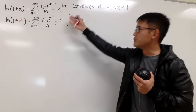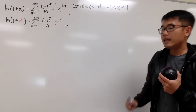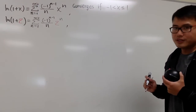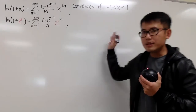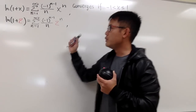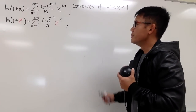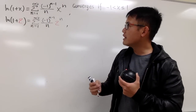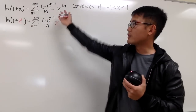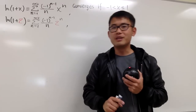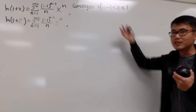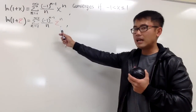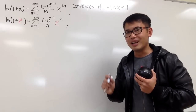We have to talk about the interval of convergence, because without it the series doesn't make sense. For example, we can't plug in x equals 5 because that's outside the interval of convergence. So let's focus on the interval of convergence for this complex logarithm.